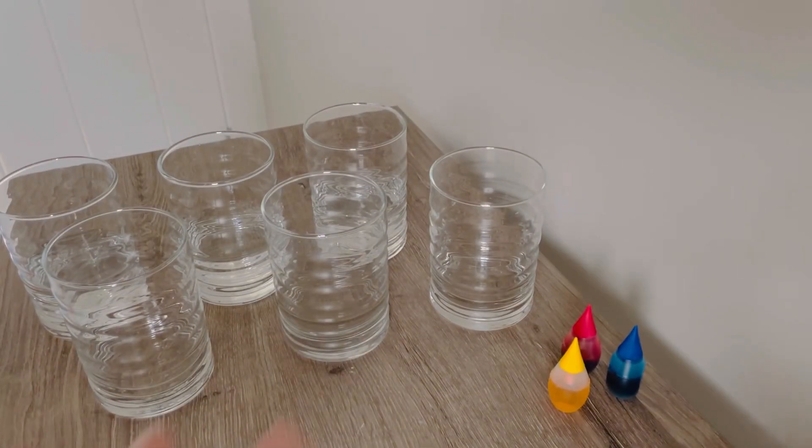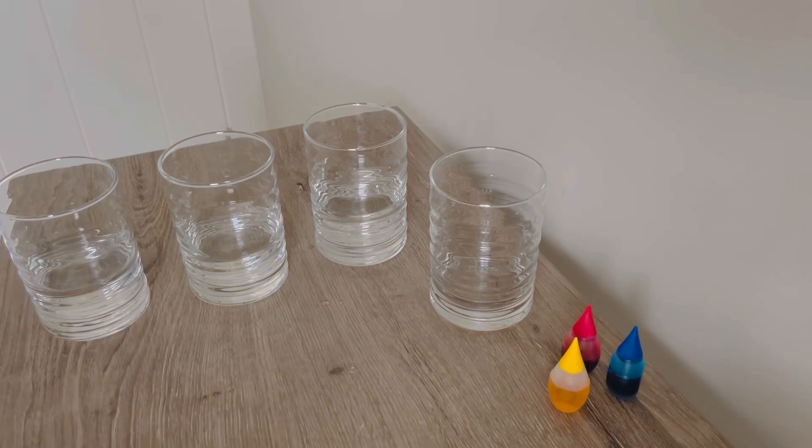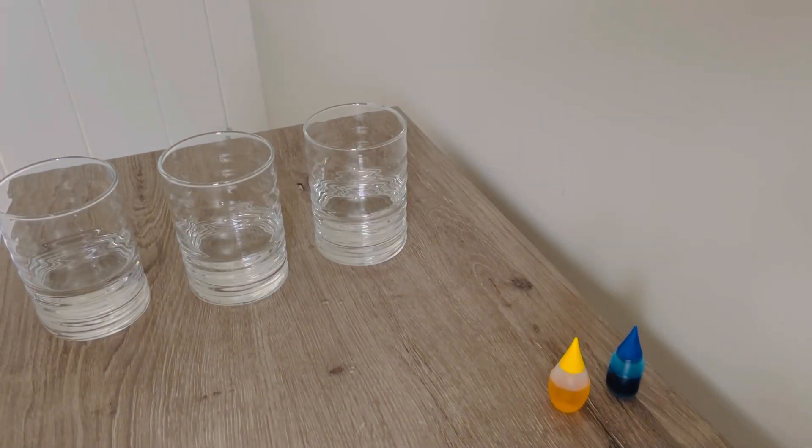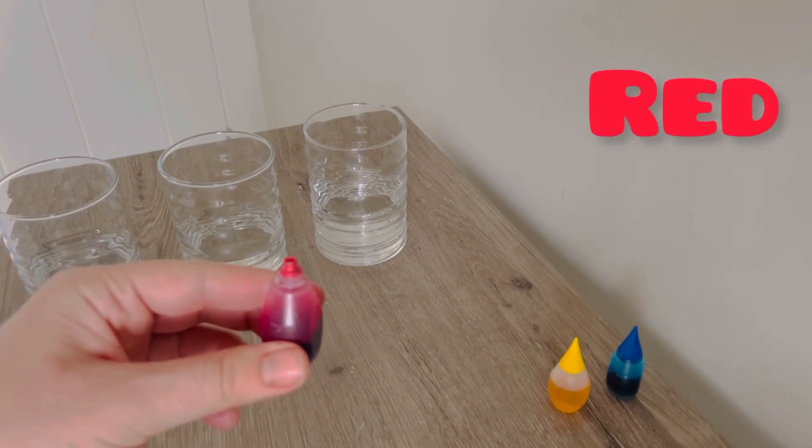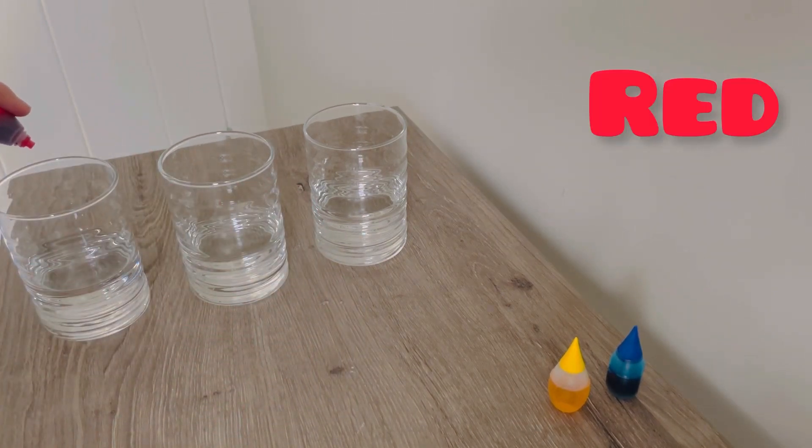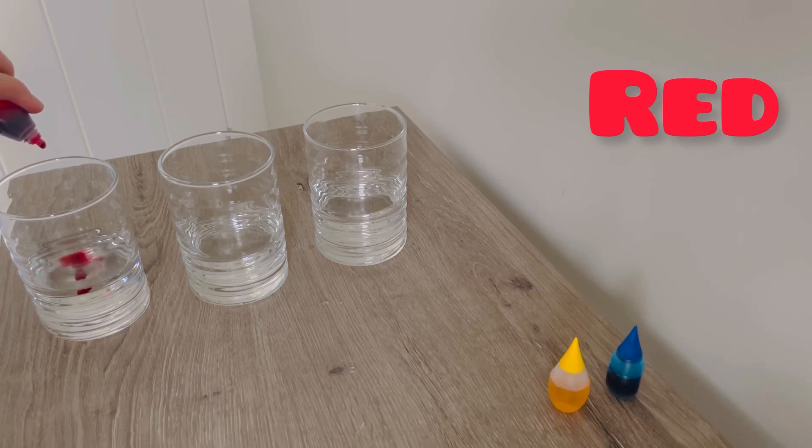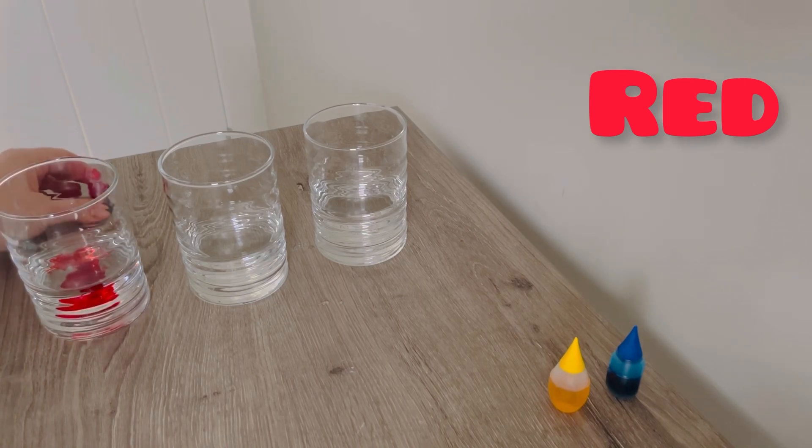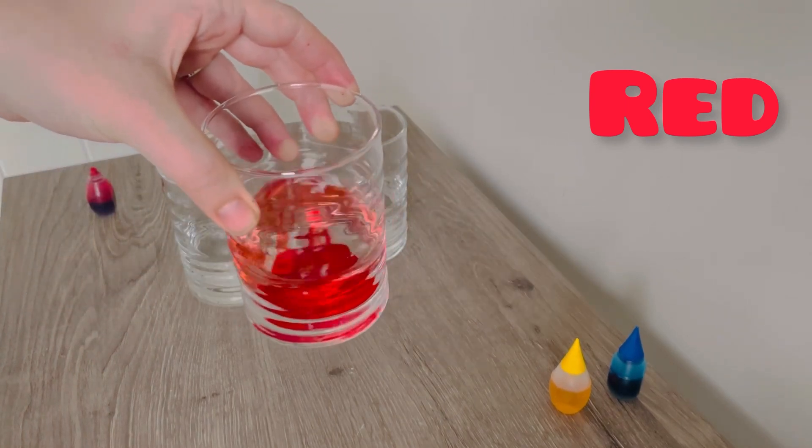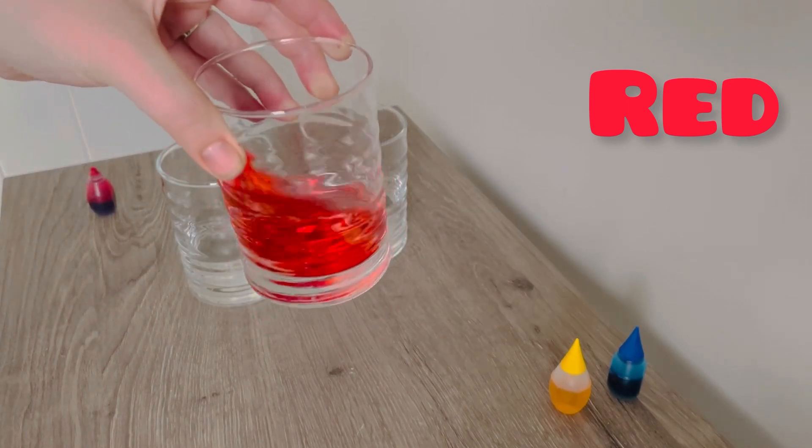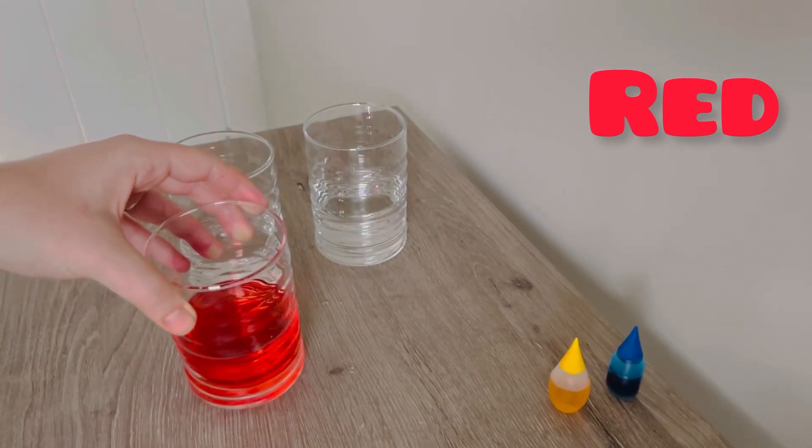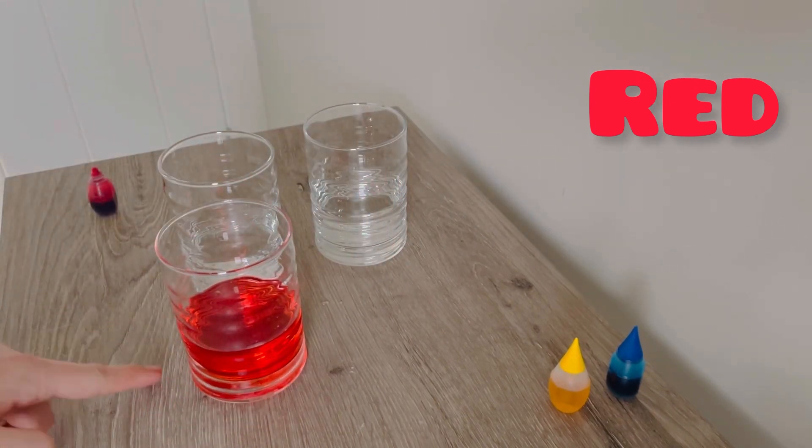So now we've started with our three cups. I wonder what happens if we put in the red food coloring. Let's do one, two, three drops. And we're going to mix, mix, mix. Stir, stir, stir. We have red.